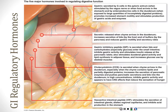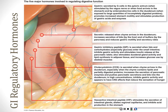Secretin comes from the duodenum and affects the liver and pancreas — it stimulates secretion from both. Gastric inhibitory peptide, or GIP, does what its name says: it inhibits the stomach, essentially working opposite to gastrin. GIP turns the stomach down. Some things we eat take longer to digest — fats in particular — so when we have a meal high in fat, GIP slows the stomach down so the small intestine has more time to do its work.